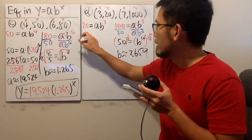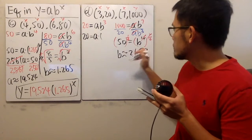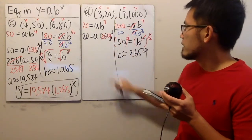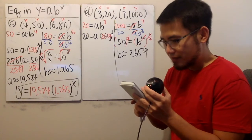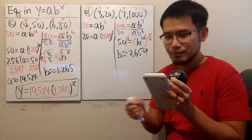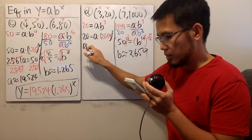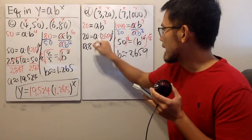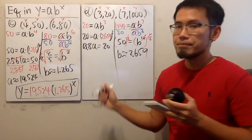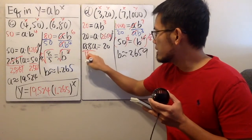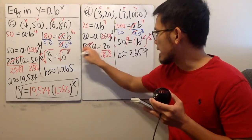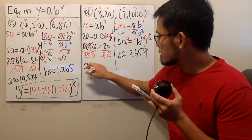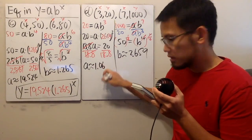Coming back to the first equation, we have 20 equals a times 2.659 raised to the 3rd power. Working out 2.659 to the 3rd power gives approximately 18.8. So 18.8 times a equals 20. Dividing both sides by 18.8, we get a approximately equal to 1.064.